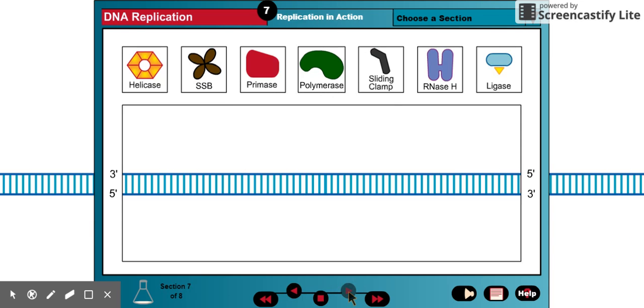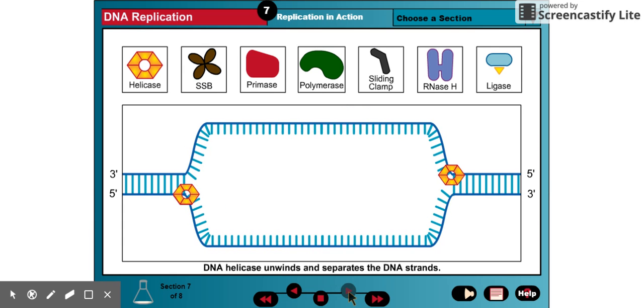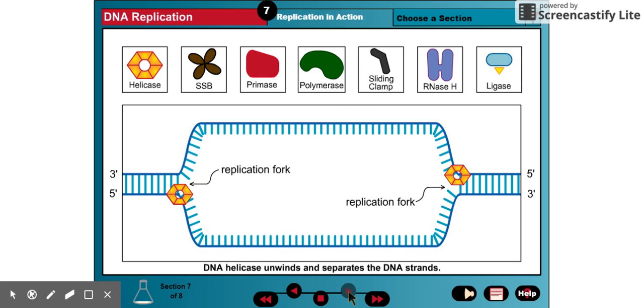We are now ready to review the steps of DNA replication. The process begins when the helicase enzyme unwinds the double helix to expose two single DNA strands and create two replication forks. DNA replication takes place simultaneously at each fork. The mechanism of replication is identical at each fork.